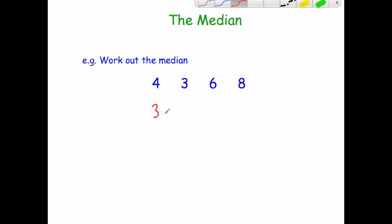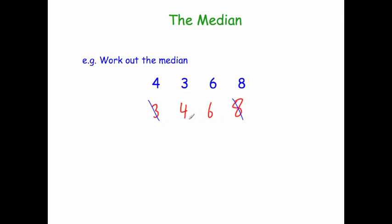So 3 is the smallest, then 4, then 6, then 8. Let's cross them off: 3 and 8. This time I'm left with two numbers in the middle. If you're left with two numbers in the middle, you find the middle of those numbers. Because we've got 4 and 6, the middle of 4 and 6 is 5 — we can see that using common sense. So the median is 5.